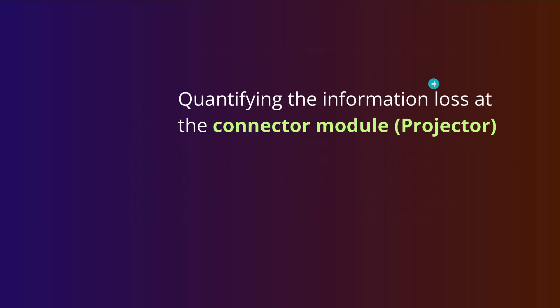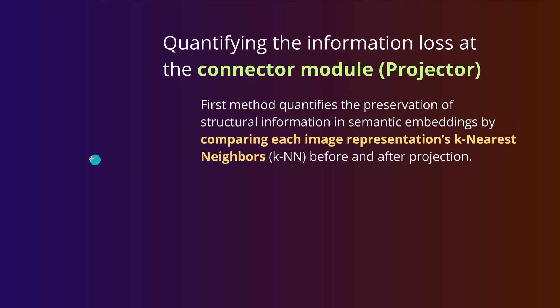We do have an information loss, and this study sets out to quantify — perhaps for the first time — this particular information loss at the connector module, at our projector. They identified two simple methods. The first looks at the structural information of the mathematical space: the structural information in the semantic embedding neighborhood. For a particular vector, you look in the epsilon environment, find images within it, and then compare each image representation to k nearest neighbors before and after the projection.